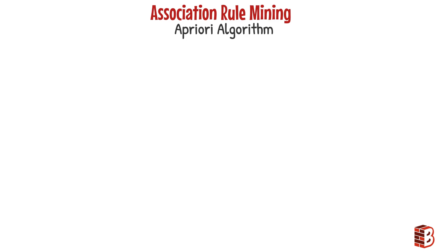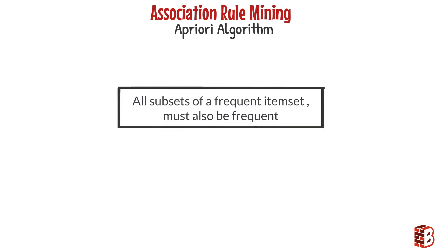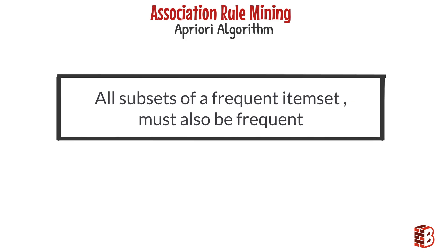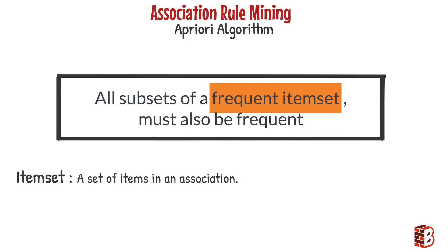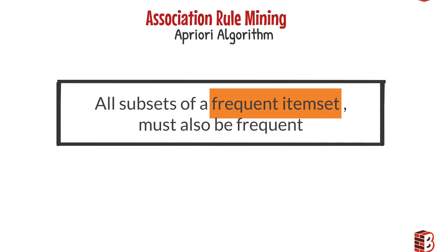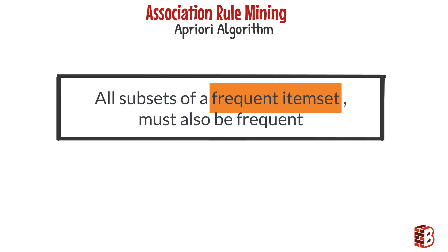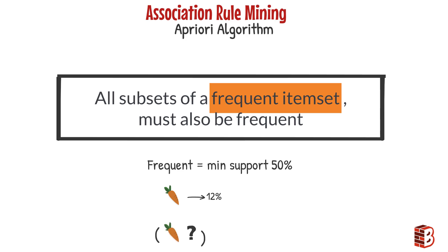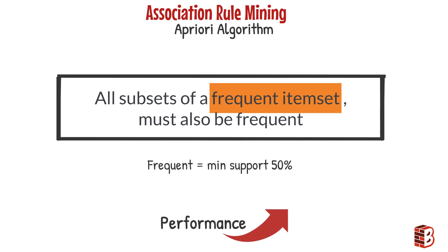The A Priori algorithm is a fundamental association rule mining algorithm based on a golden rule: all subsets of a frequent item set must also be frequent. An item set is simply all the items in a certain association, and an item set is called frequent if it satisfies the minimum required value of support. For example, the minimum required support is 50%, and carrot appears in only 12% of transactions — there is no chance of finding an item set containing carrot that appears in more than 50% of transactions. So we can just discard carrot and won't look at any association containing it, which massively reduces the complexity of the algorithm.